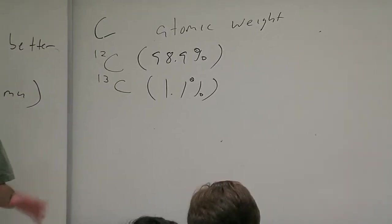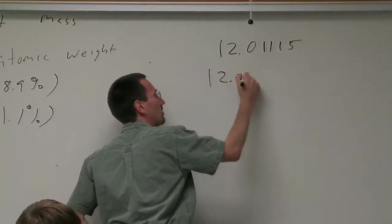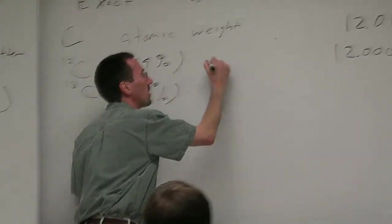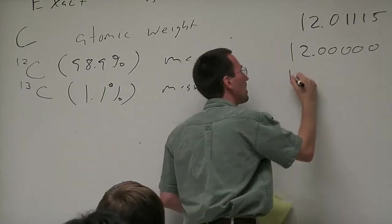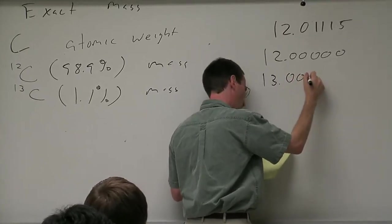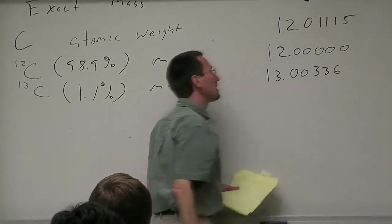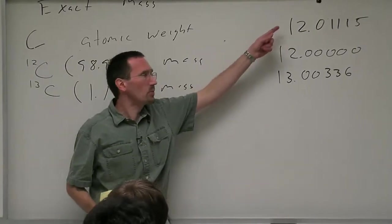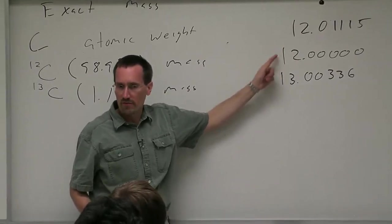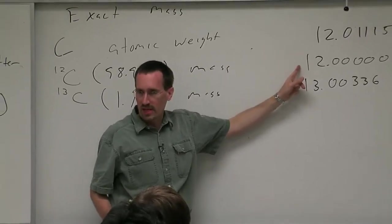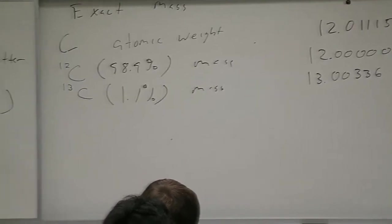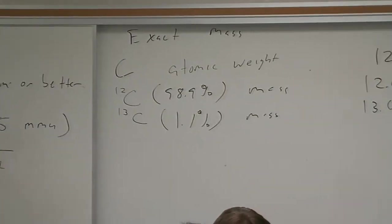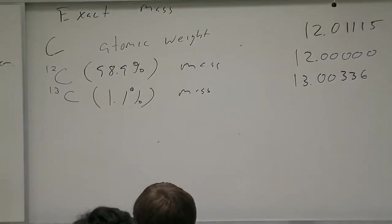The mass of carbon 12 is set by definition as 12.0000. The mass of carbon 13 is 13.00336. When you go and weigh out a mole of carbon, what you're really doing is taking the weighted average of these two numbers: 98.9% of this number and 1.1% of that number.